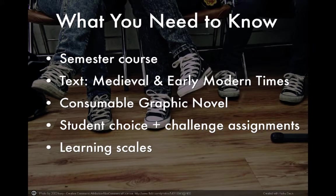In Garden Grove Unified, 7th grade world history is a semester course. This means that your child has to demonstrate mastery of the focused standards for world history in 20 weeks as opposed to 40 weeks. Needless to say, this is a fast-paced course.